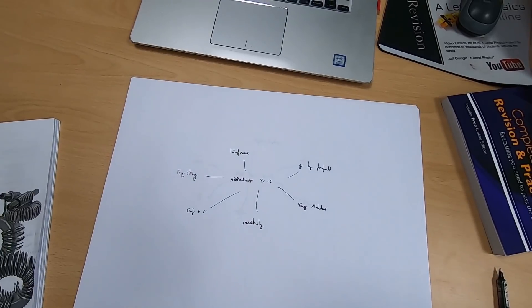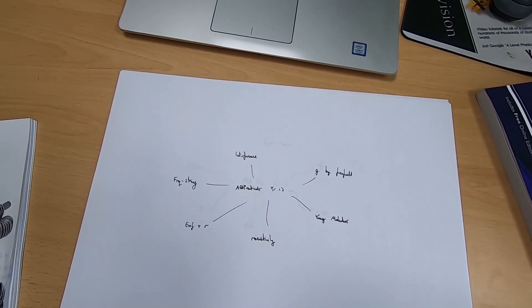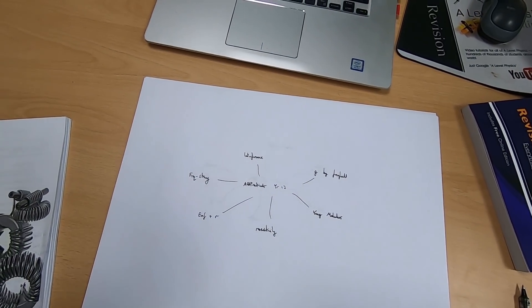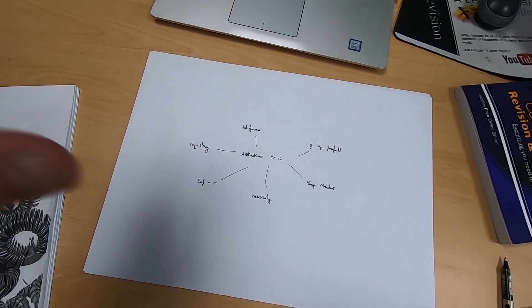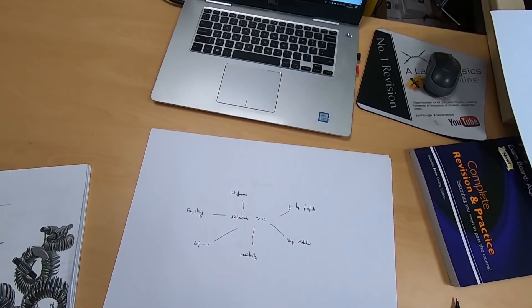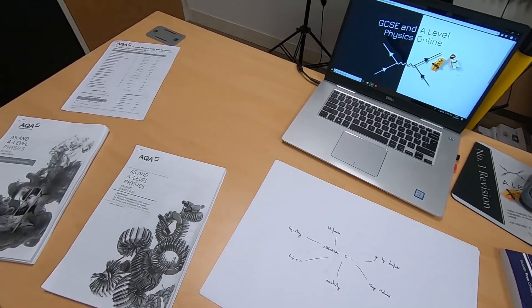Now this is the same thing that you should be doing as you're doing any of your revision. It doesn't matter if you're doing OCR or Edexcel, you should all be revising in the same kind of way. You start out with a big sheet of paper, write down what you know, and then you can refer to other things to help you.